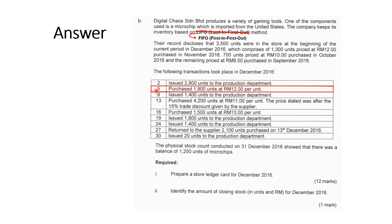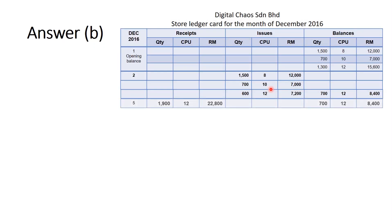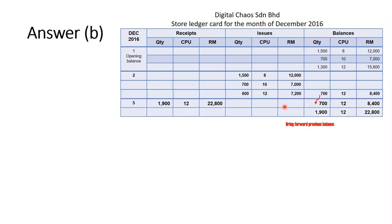On 5th December, we purchase 1,900 units at RM12 per unit. We bring forward the previous balance of 700 units at RM12, as it is the oldest batch. Then we record the new batch of 1,900 units at RM12 at the bottom of the record.